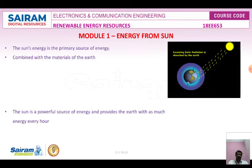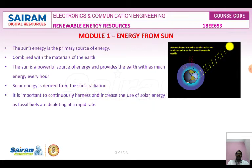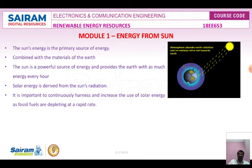There are two ways energy comes from the sun which are useful for domestic applications. First, the sun radiates light energy, which is converted into electrical energy. Second, the sun radiates heat energy, which is converted into mechanical energy to produce electricity. These are the two major applications.